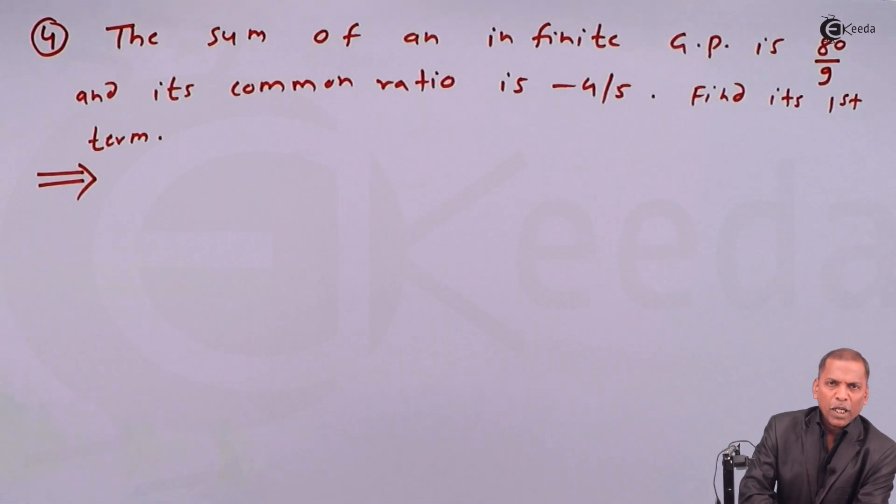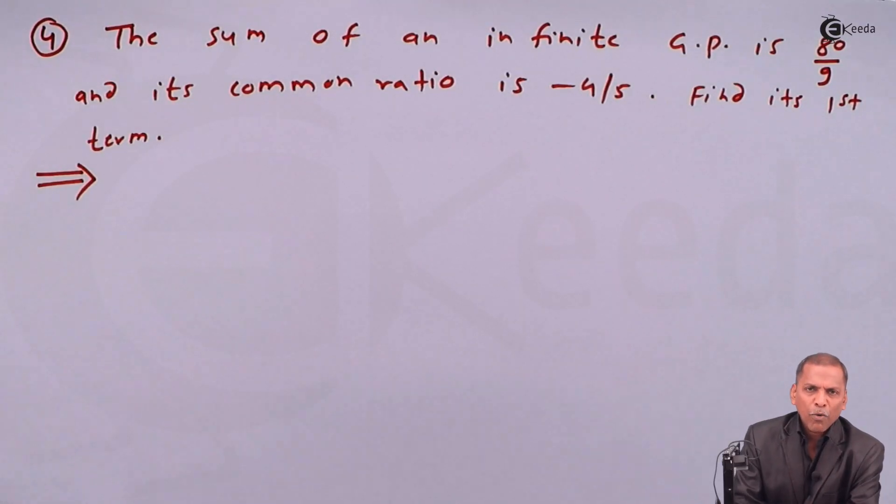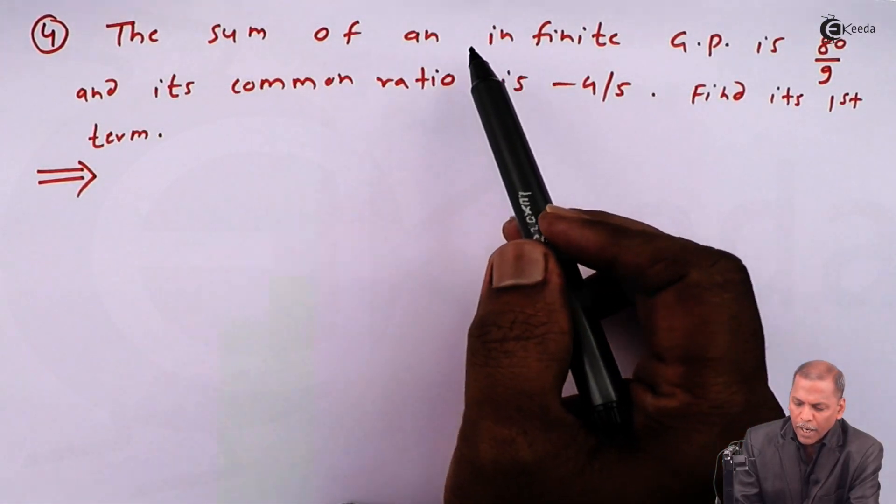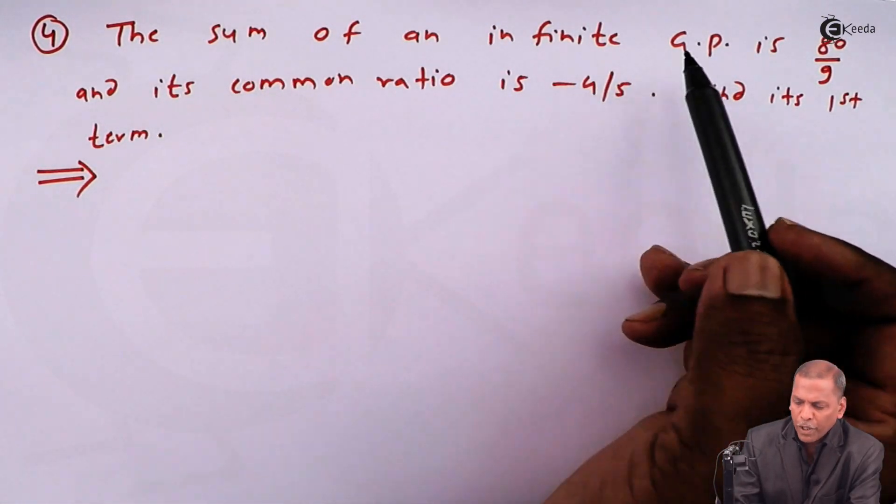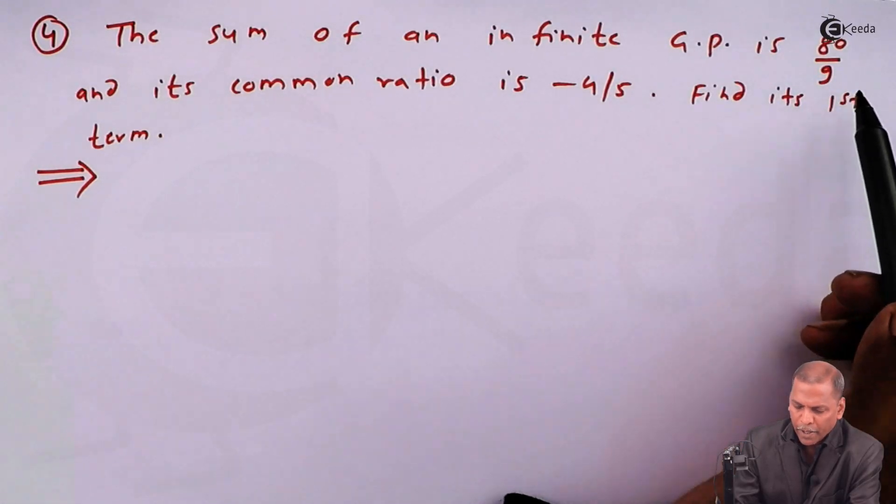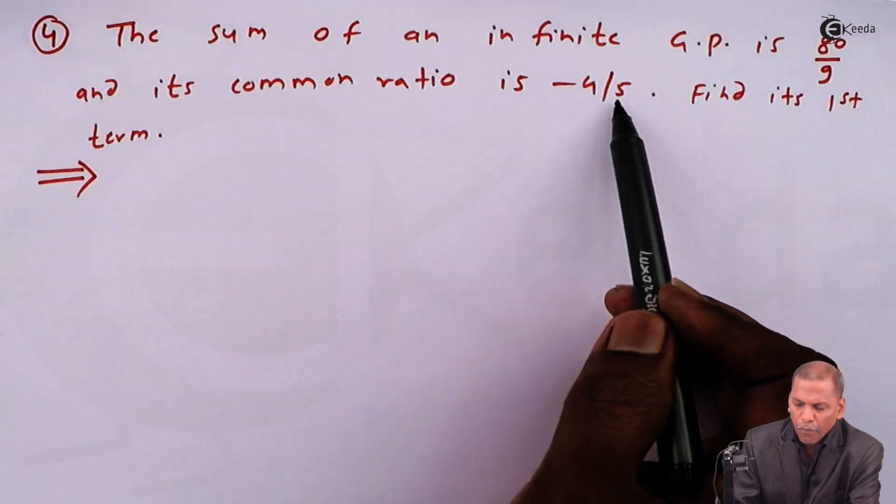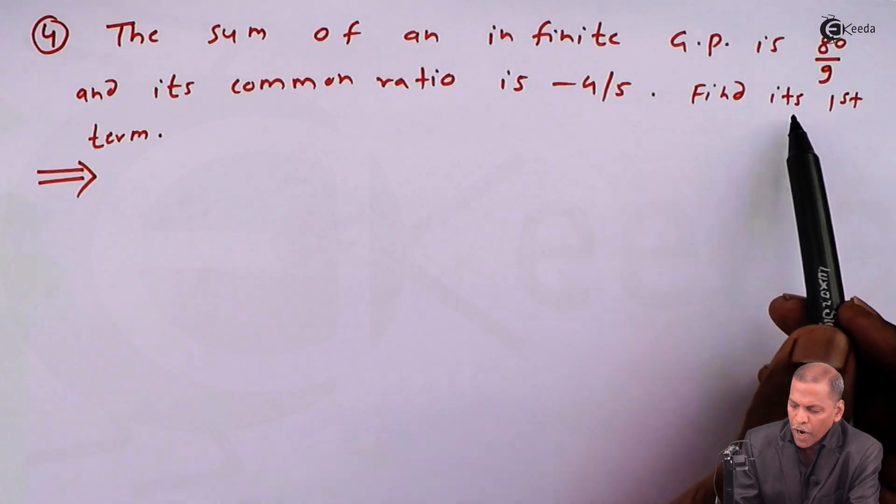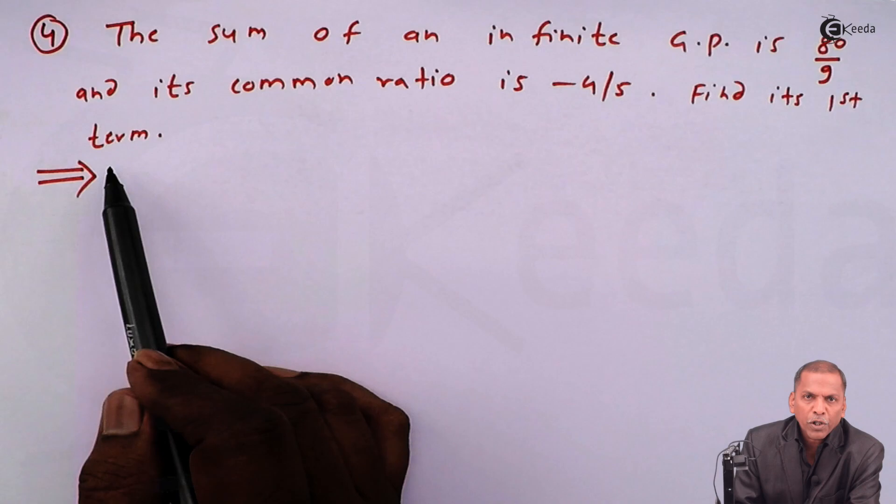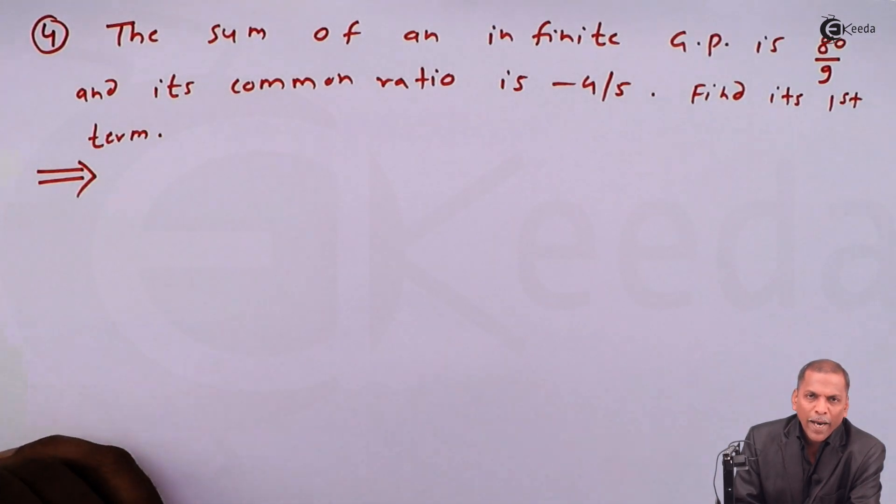Hello friends, now we see problem number 4, which is also based on sum to infinity of a GP of chapter sequence and series. The problem 4 is: the sum of an infinite GP is 80 upon 9 and its common ratio is minus 4 upon 5. Find its first term.